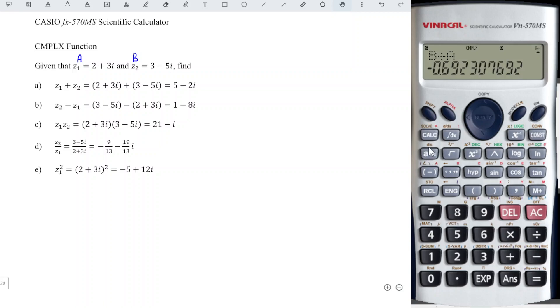Or we just use fraction. So we press the F↔D button to get the fraction form. So we have -9 over 13.